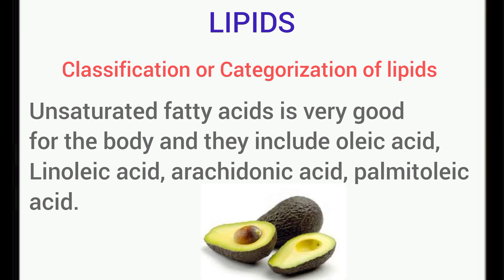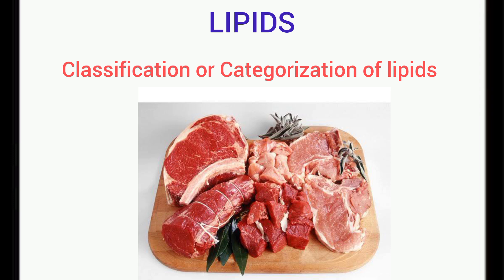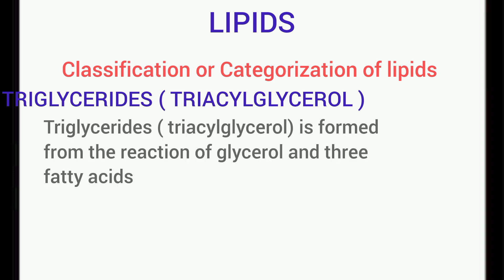The unsaturated fatty acids are actually very good for the body, and they include oleic acid, linoleic acid, and others as seen on the screen, while the saturated fatty acid is found in red meats and other animal products. This particular saturated fatty acid is unhealthy for the body of living organisms.